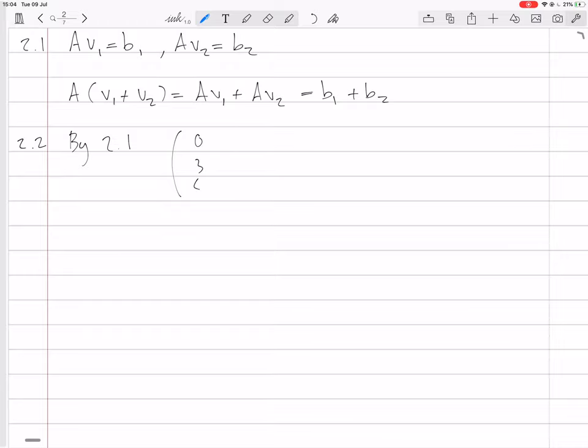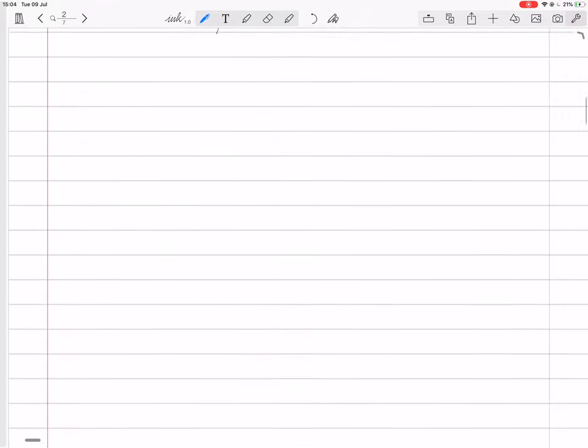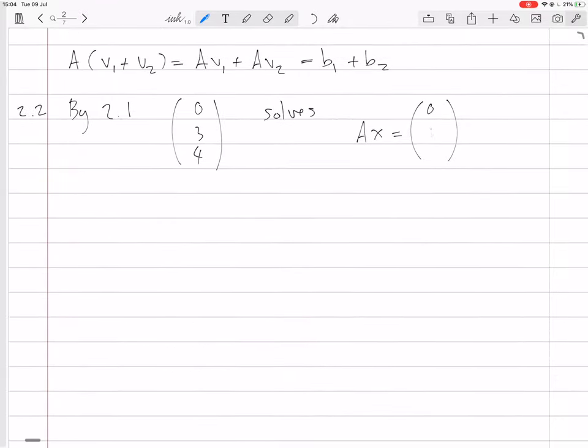By part 1, (0, 3, 4) solves Ax equals... what was that thing that was a sum? It was (0, 1, 1). We don't have any homogeneous solutions, so we can't write down any more solutions.